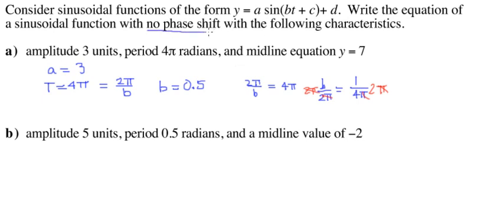They said there is no phase shift. For all of these that will mean c equals 0. C is the phase shift number and d is the location of our midline which they say is y equals 7. That means our d value is 7.